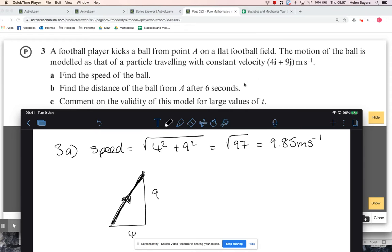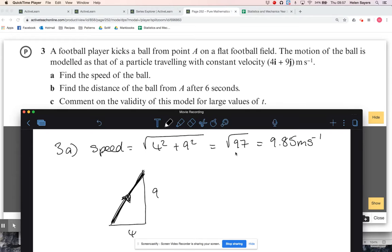Find the distance of the ball from A after 6 seconds. Okay, so let's do the displacement. I'm just reading this question a bit more carefully. What is it travelling with a constant velocity? No, so it's a constant velocity, so it's going to be a constant speed, so let's not overcomplicate things.